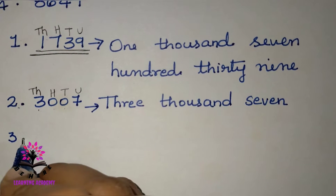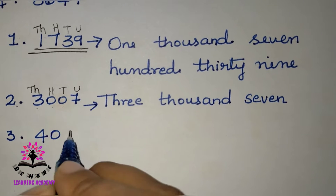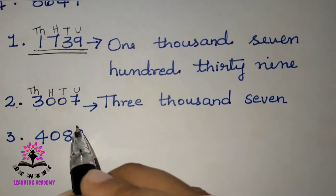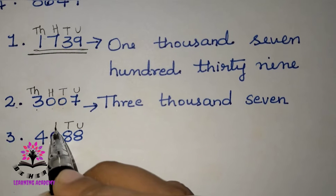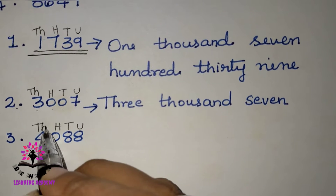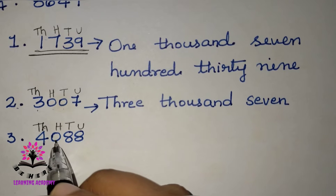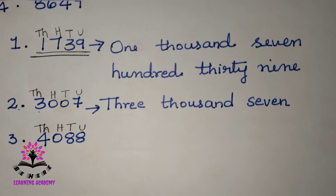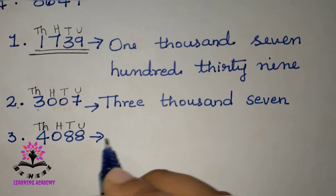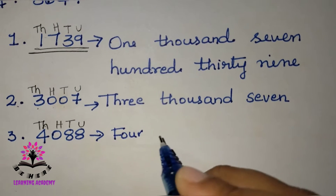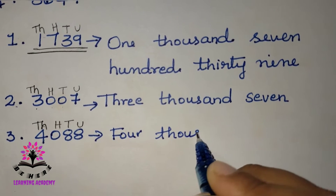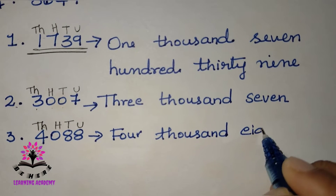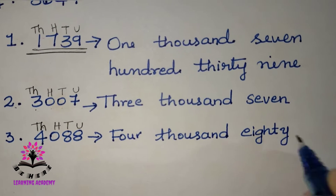The next question is 4088. Write the places: units, tens, hundreds, thousands. Since there is a zero in hundreds place, we read this as four thousand and eighty-eight.